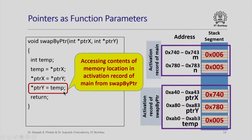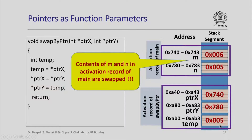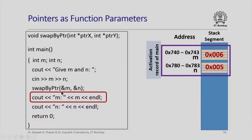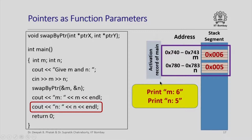In the next statement, the value of temp, which is 5, is copied to the memory location whose address is given by the value of pointer_y, which is 0x780 — the memory location reserved for n. So n gets updated with the value 5. The contents of m and n have been swapped in main's activation record, but all of this happened inside the function swap_by_pointer. Now when I return from swap_by_pointer, its activation record is gone. However, the values of m and n have already been swapped, so when I print the values of m and n I will print the swapped values.